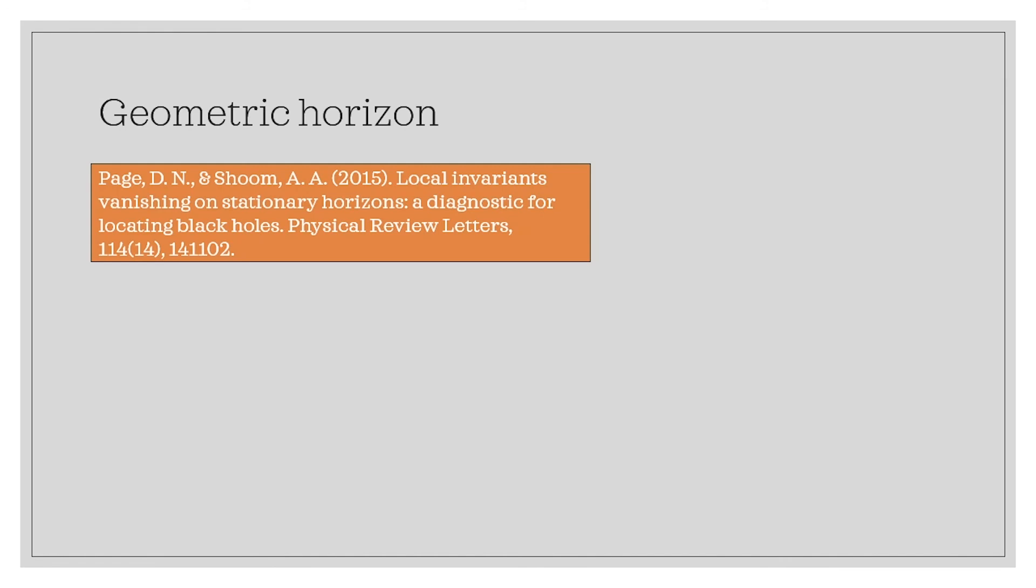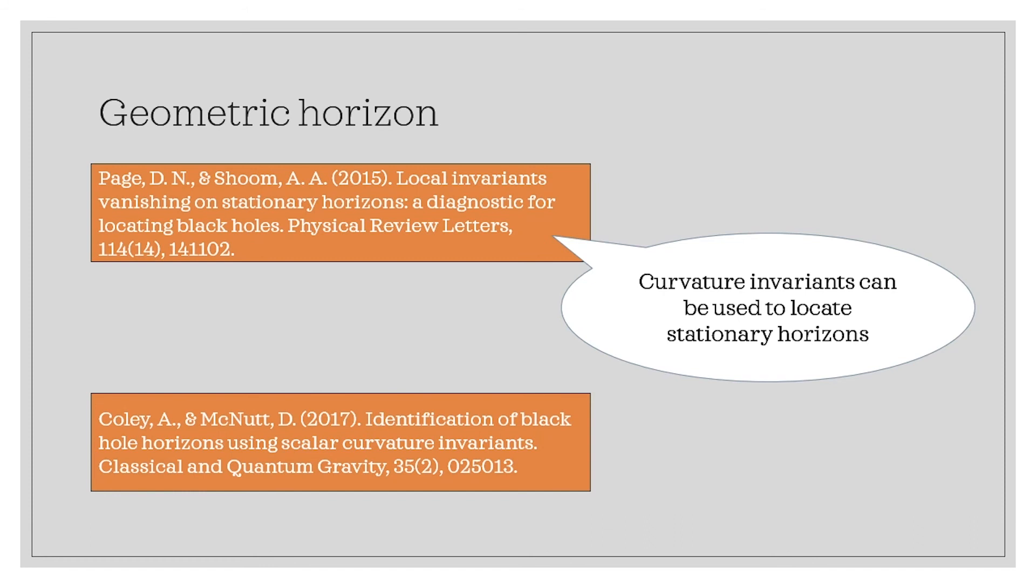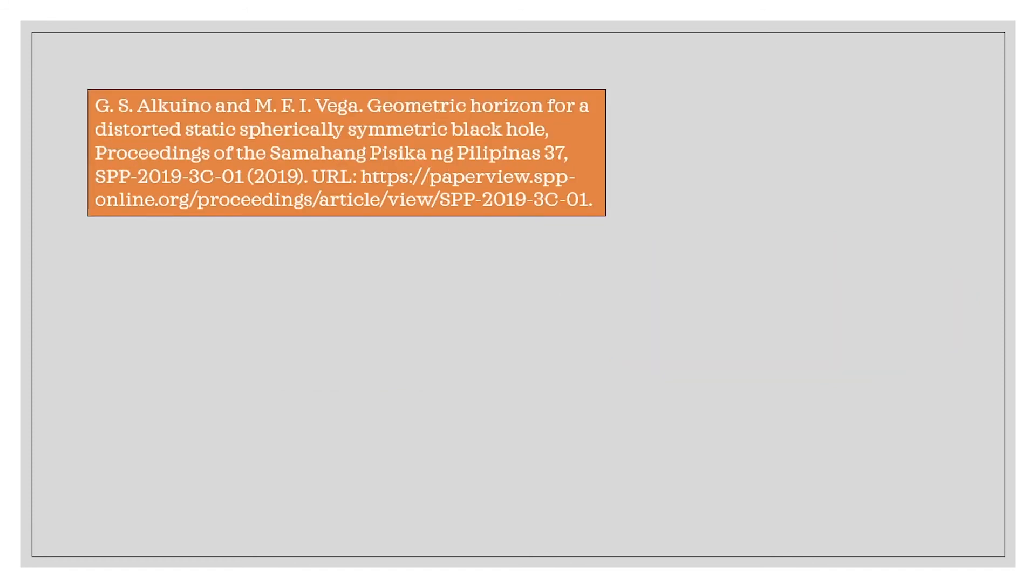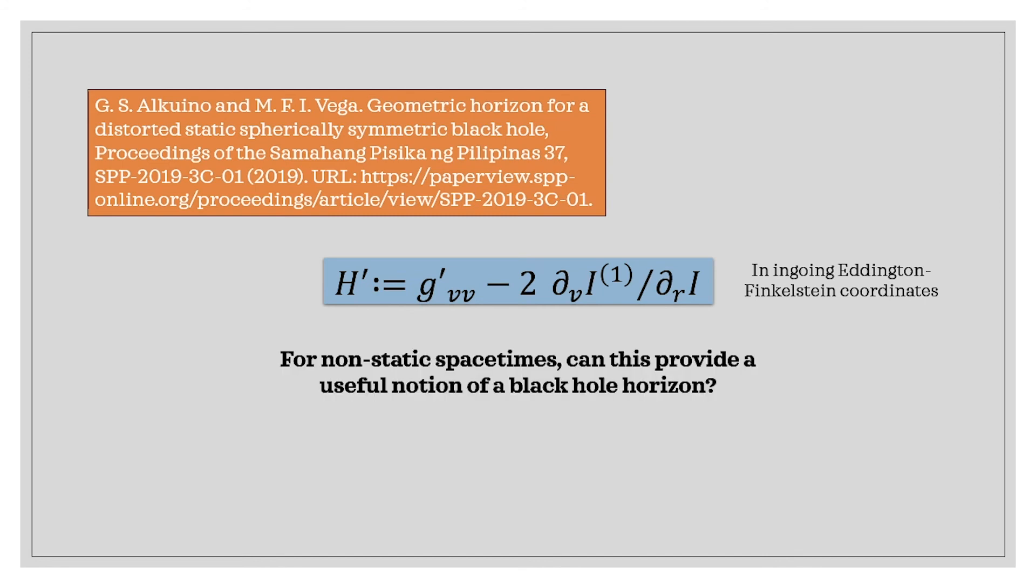Essentially, a geometric horizon is defined by the vanishing of some curvature invariant. This concept was first introduced by Page and Schoom in this paper, where they showed that curvature invariants can be used to locate stationary horizons. However, the term geometric horizon was first introduced by Coley and McNaught in this paper. In our previous work, we showed that the geometric horizon for a perturbed static spherically symmetric black hole reduces to this equation in ingoing Eddington-Finkelstein coordinates, where I is any well-defined curvature invariant. This horizon coincides with a Killing horizon when the perturbations are static. A natural question then to ask is for non-static spacetimes, can this provide a useful notion for black hole horizon.